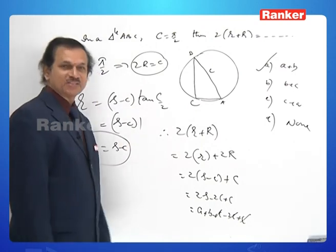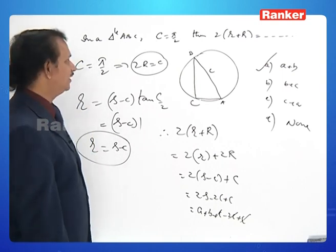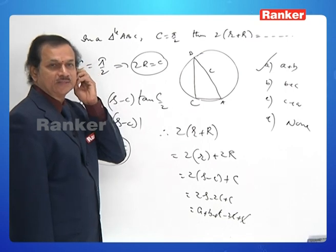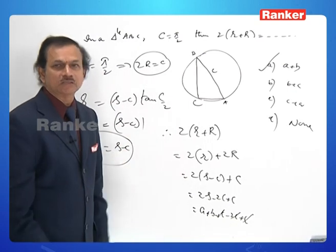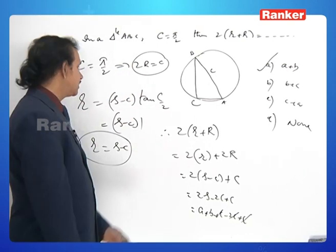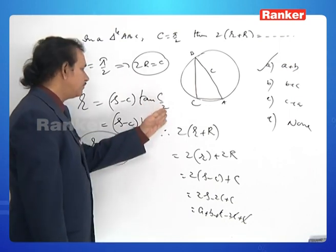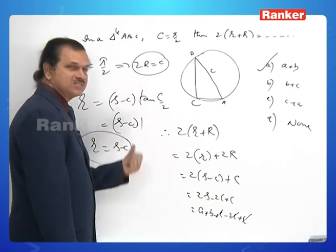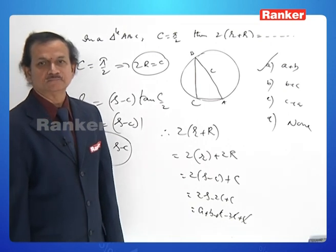The key insight: since C = 90°, use r = (s − c) · tan(C/2) = s − c (because tan 45° = 1), and 2R = c. Combining gives 2r + 2R = a + b.